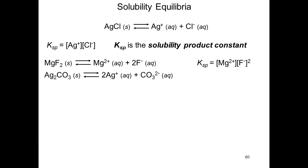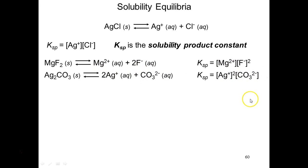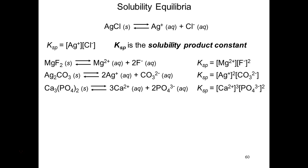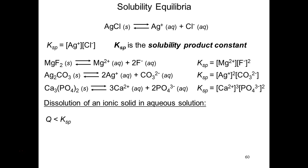Here are a couple more examples. The stoichiometric coefficient of two for the cation and one for the anion is reflected in the solubility product expression. Here's one more example.